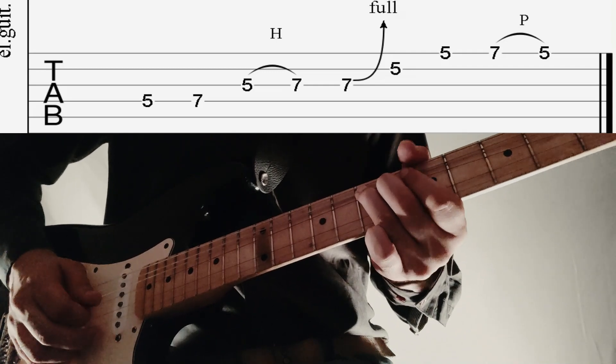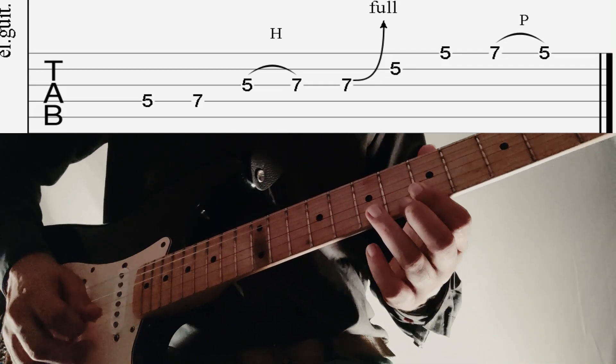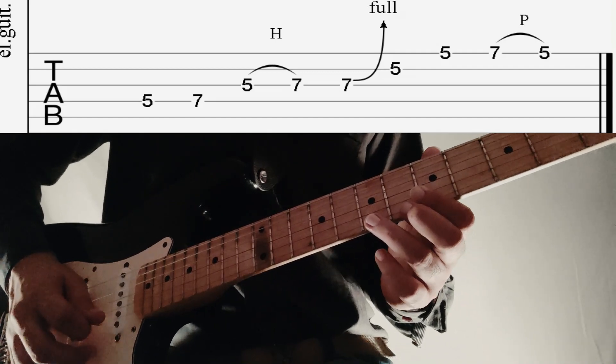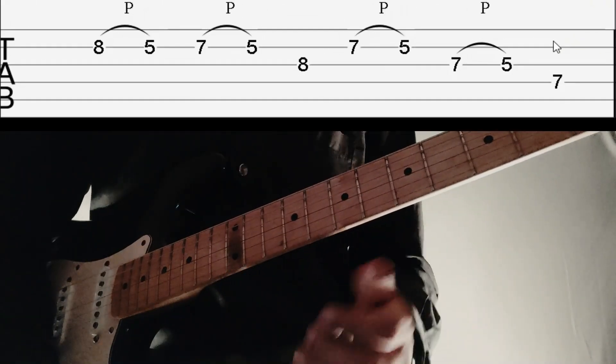Followed by a bend, then 5 on B and E string and pull off from 7 to 5 on high E. So let's begin section number 3.